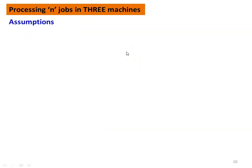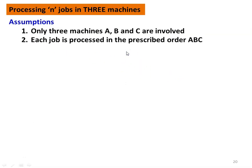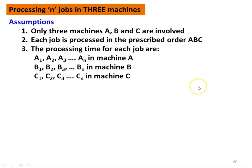Processing n jobs in three machines — the assumptions: only three machines are involved, A, B, C are the machines. As in the previous model, each job is processed in the prescribed order A, B, C. You can change the order to B, C, A, but you have to define the problem properly. Before preparing the sequence, we have to define the order of processing the job.